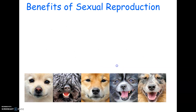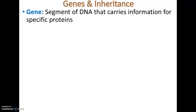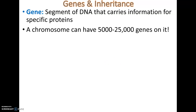A gene is a segment of DNA that carries information to make specific proteins. We usually think of genes as coding for traits, which is true, but technically what genes code for is the production of specific proteins. One chromosome can carry five thousand to twenty-five thousand genes, so don't think of a chromosome as coding for just one thing like blood type — it also codes for thousands of other things.